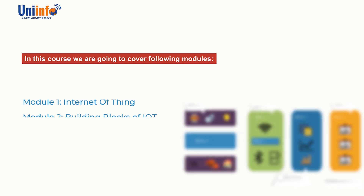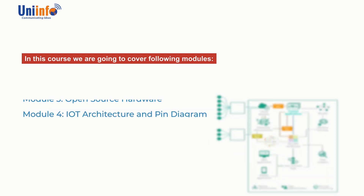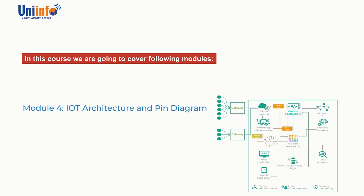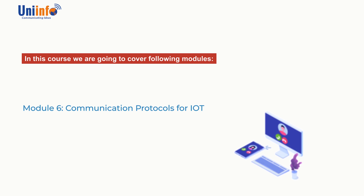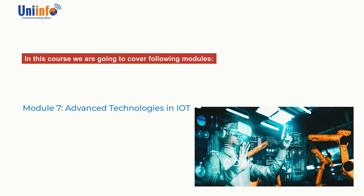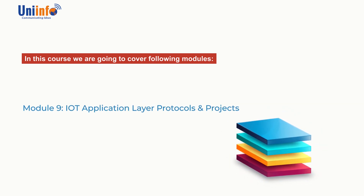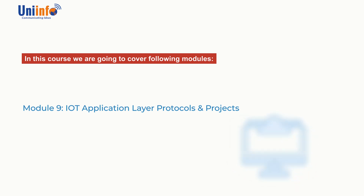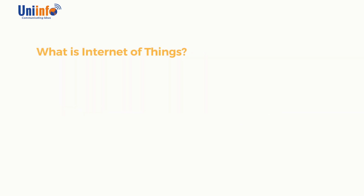In this course we are going to cover the following modules: Module 1 — Internet of Things; Module 2 — Building Blocks of IoT; Module 3 — Open Source Hardware; Module 4 — IoT Architecture and Pin Diagram; Module 5 — Raspberry Pi and Projects; Module 6 — Communication Protocols for IoT; Module 7 — Advanced Technologies in IoT; Module 8 — Introduction to Arduino and Projects; Module 9 — IoT Application Layer Protocols and Projects; Module 10 — IoT Cloud Services.